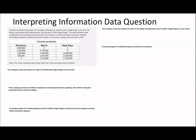Let's move on to the next question, which is very similar to one I've done previously on this channel about machine A and machine B with ratios and comparisons. In an hour a factory can produce 300 sharing boxes, 450 big bars, or 1500 single fingers. The table shows combinations the factory can make in a month working at maximum capacity.